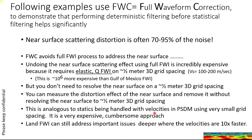This is analogous to statics being handled separately. You could handle statics with velocities in pre-stack depth migration using very small grid spacing, but this is just a very expensive cumbersome approach — it's faster and actually more accurate to handle it separately. Land FWI can still address important issues deeper where the velocities are 10 times faster, but it's not the best approach for the half meter grid spacing problem.